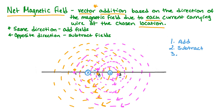And finally, at position 3, both the yellow and pink magnetic fields will be pointing to the bottom of the screen, which means they are pointing in the same direction, so we will once again add the magnitudes. We can see that positions 1 and 3 will have larger net magnetic fields than position 2, as we added the individual fields at 1 and 3.